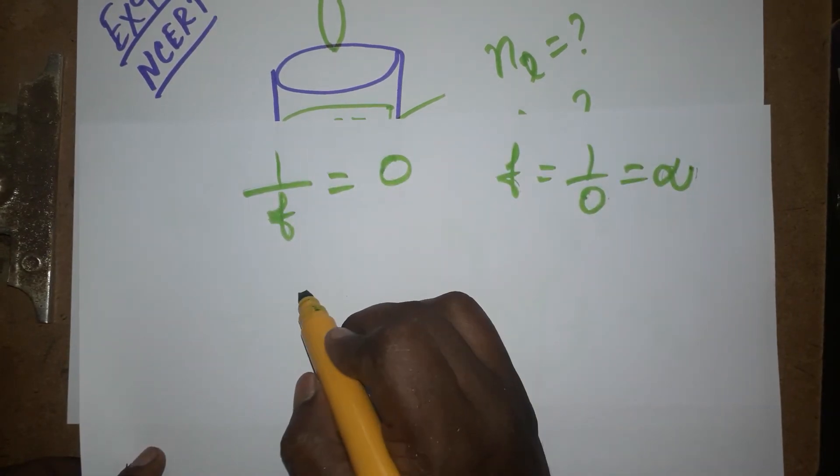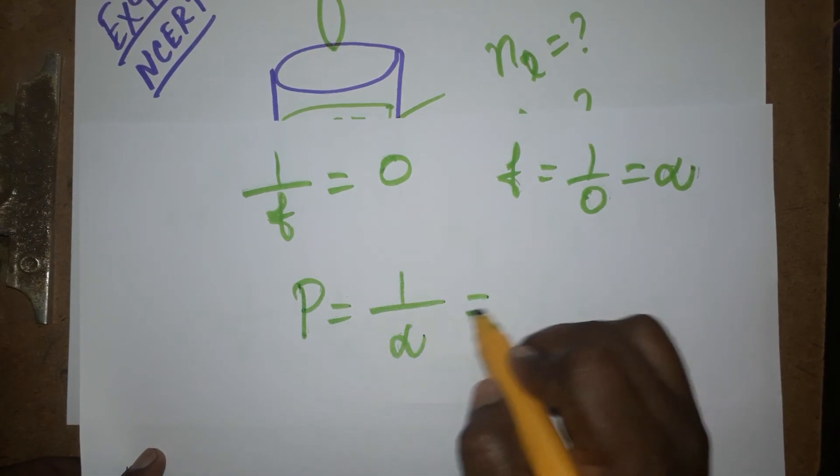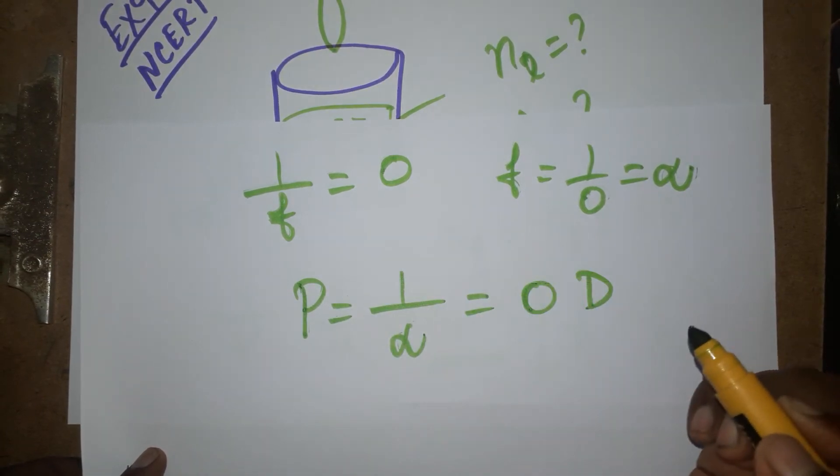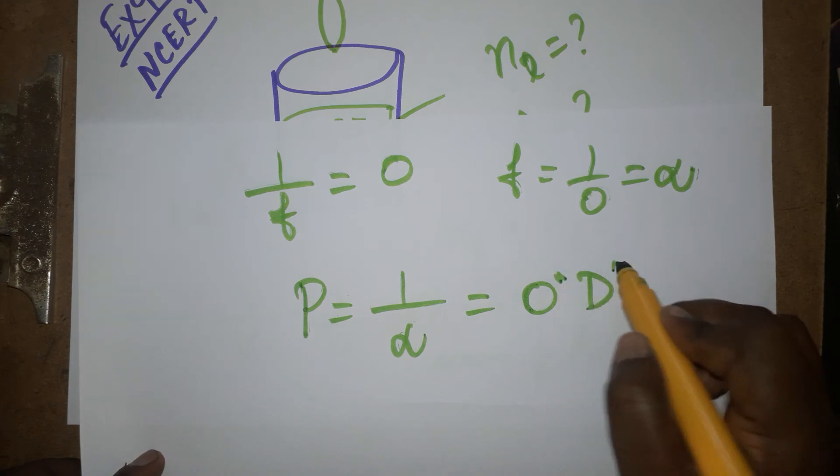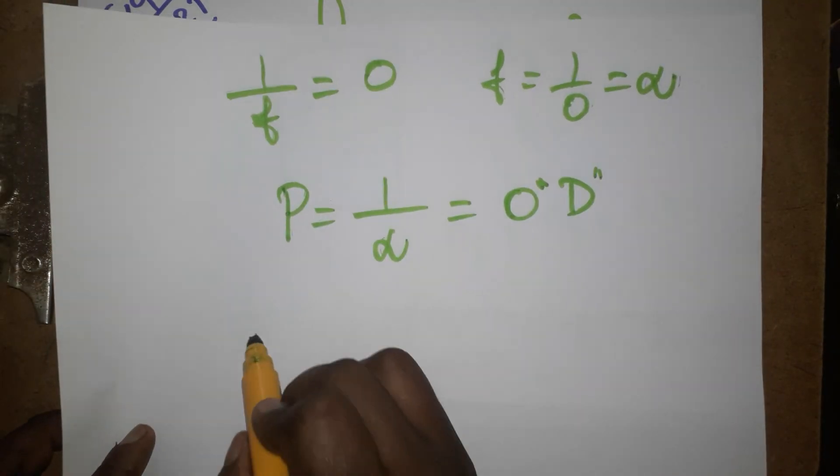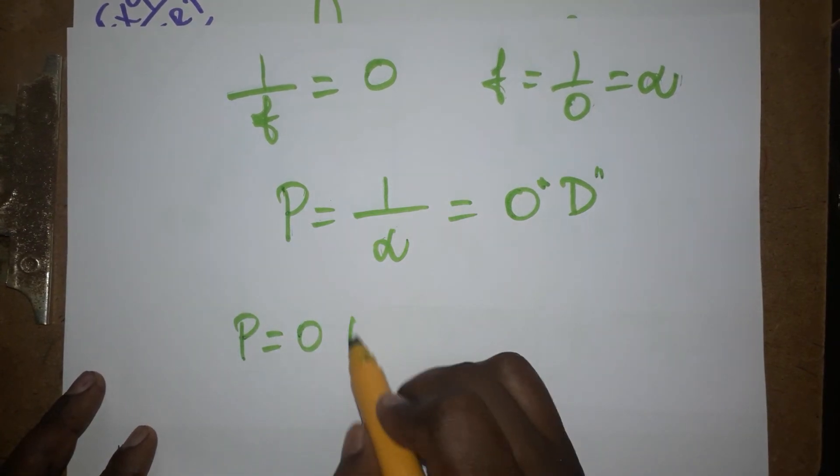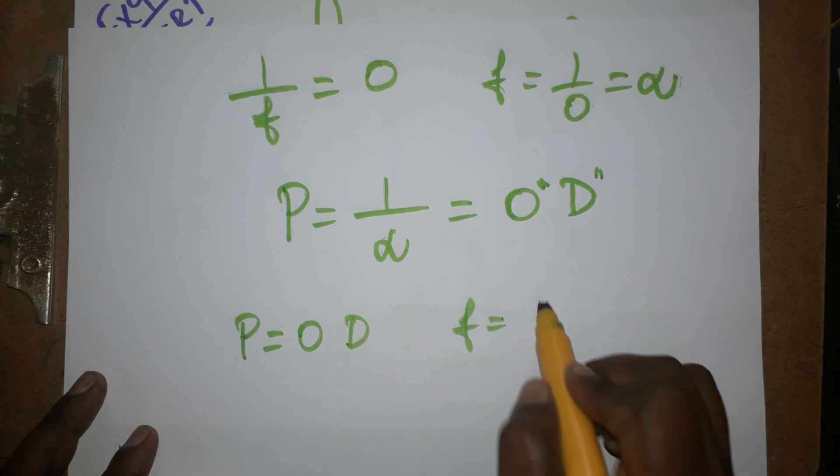Power equals 1 divided by infinite, which equals zero diopter. Focal length will be infinite for this condition. Even in sunglasses, the power will be zero and focal length will be infinite.